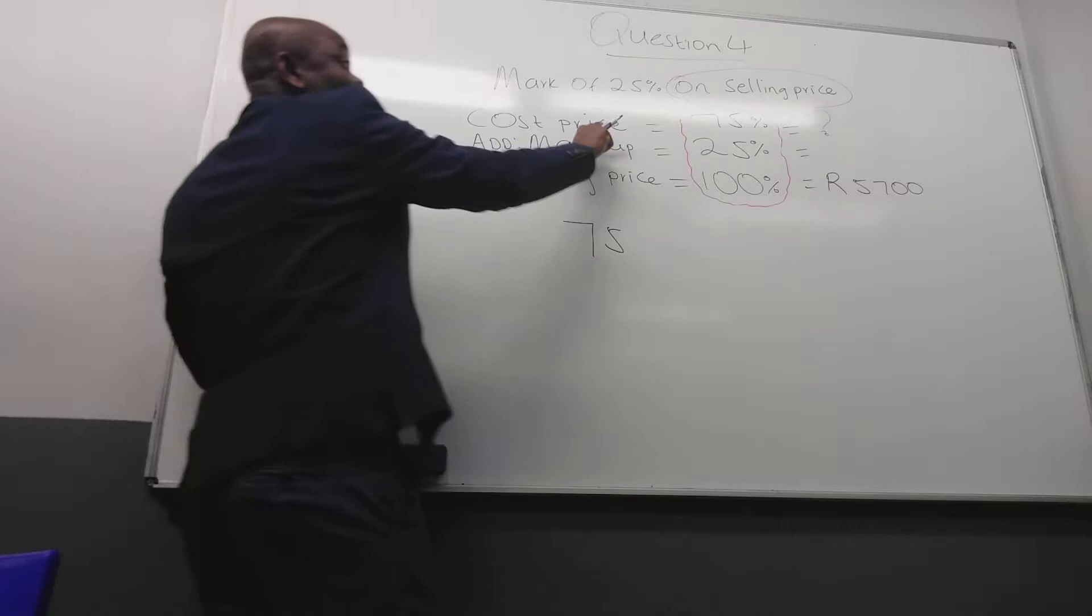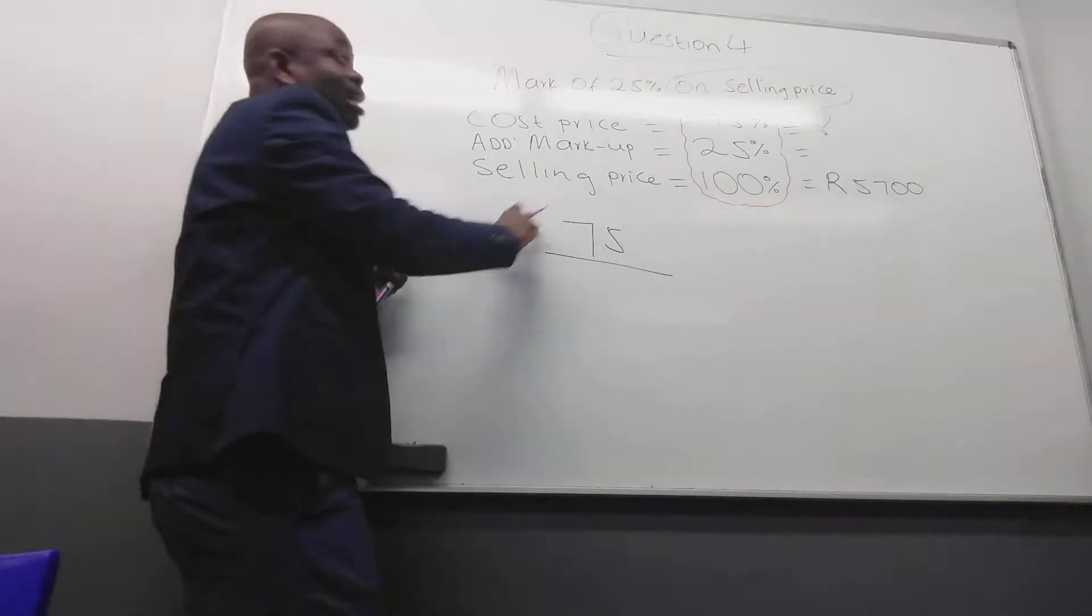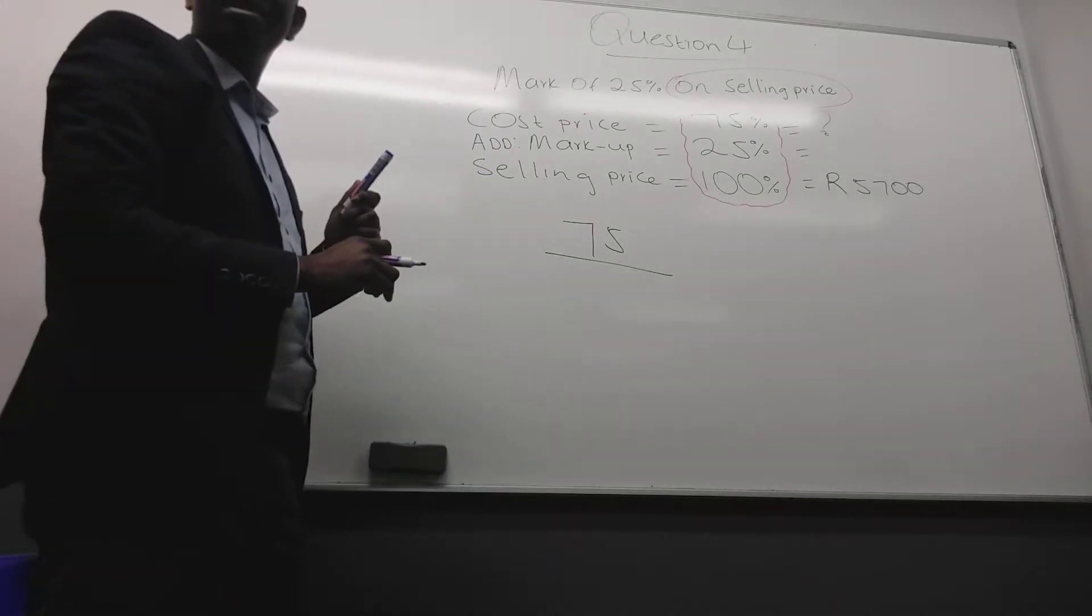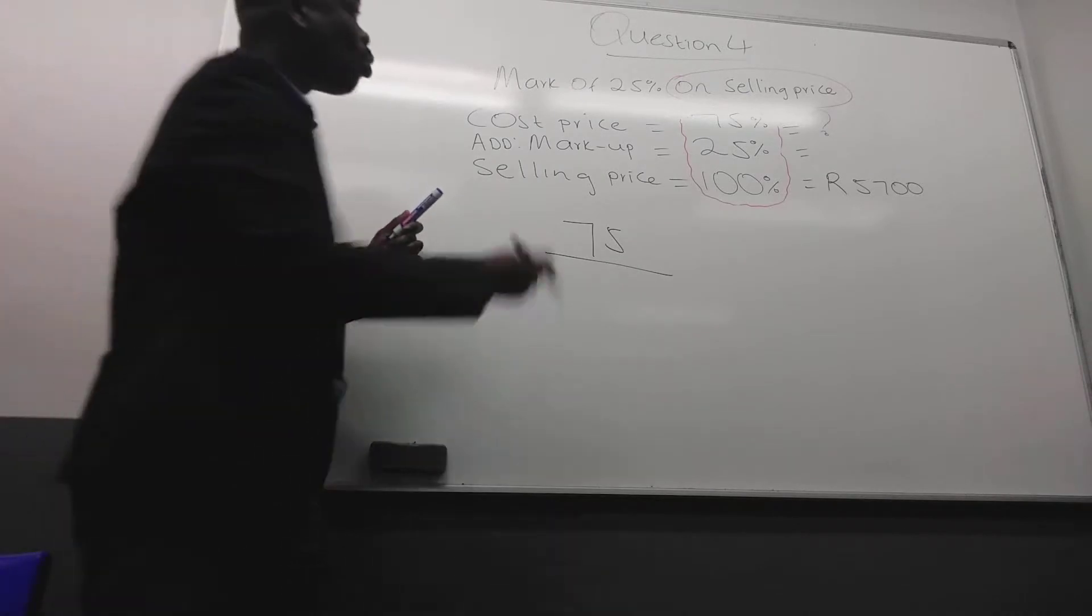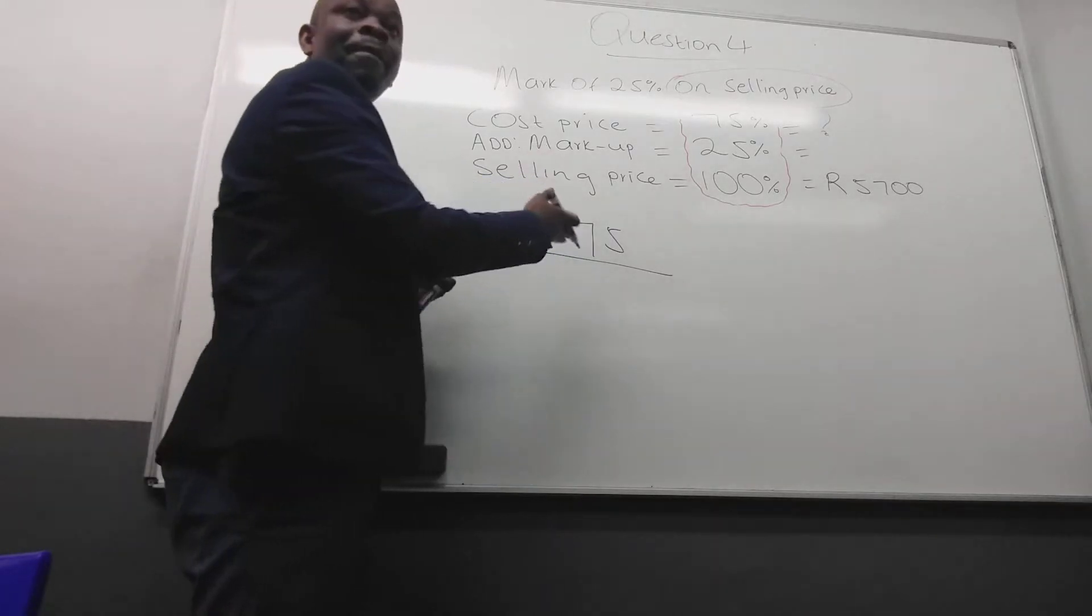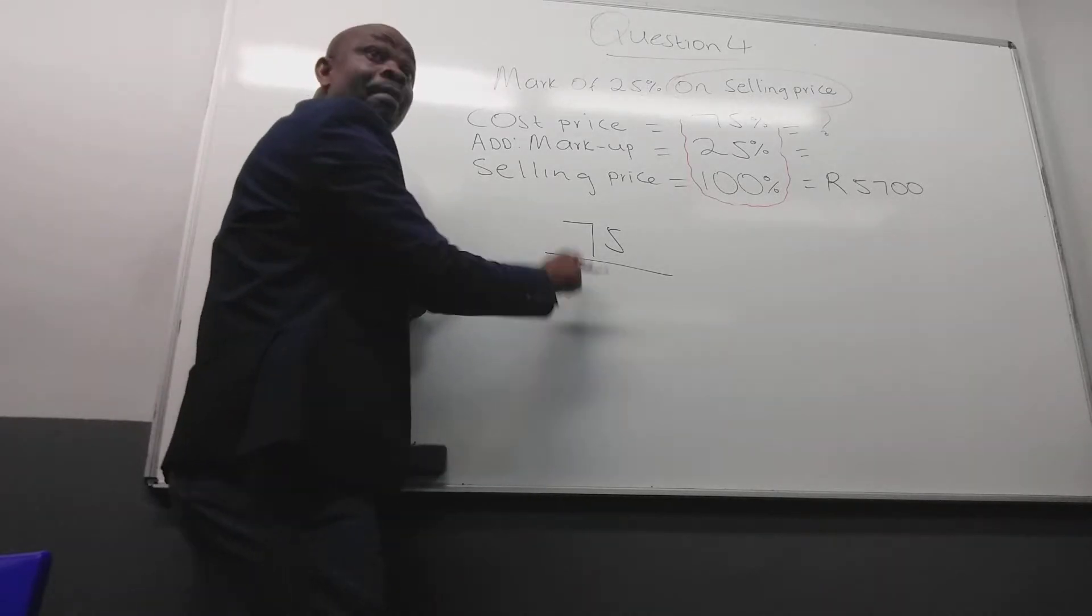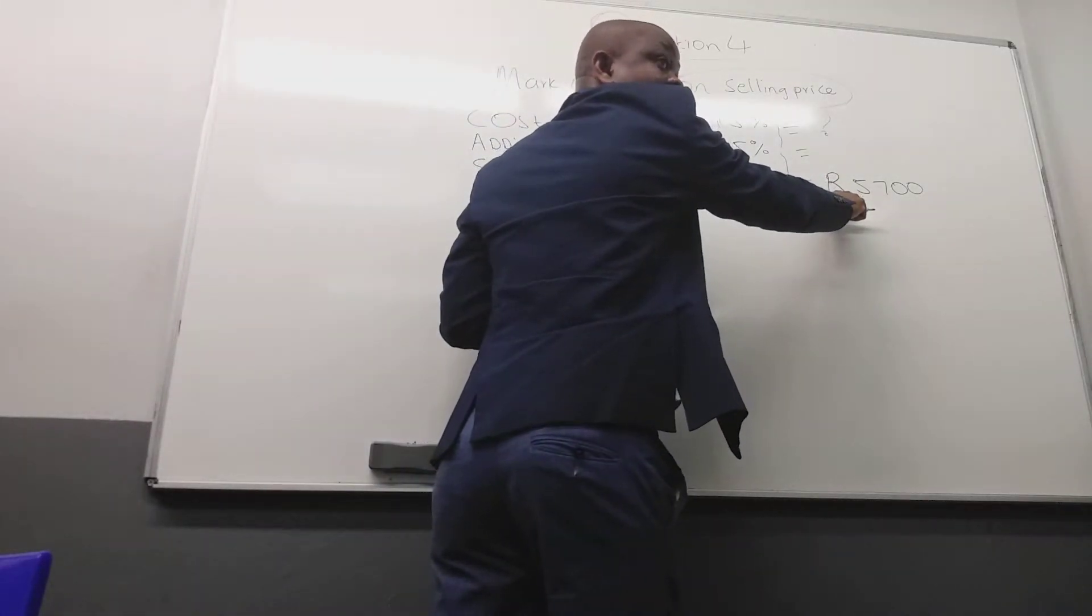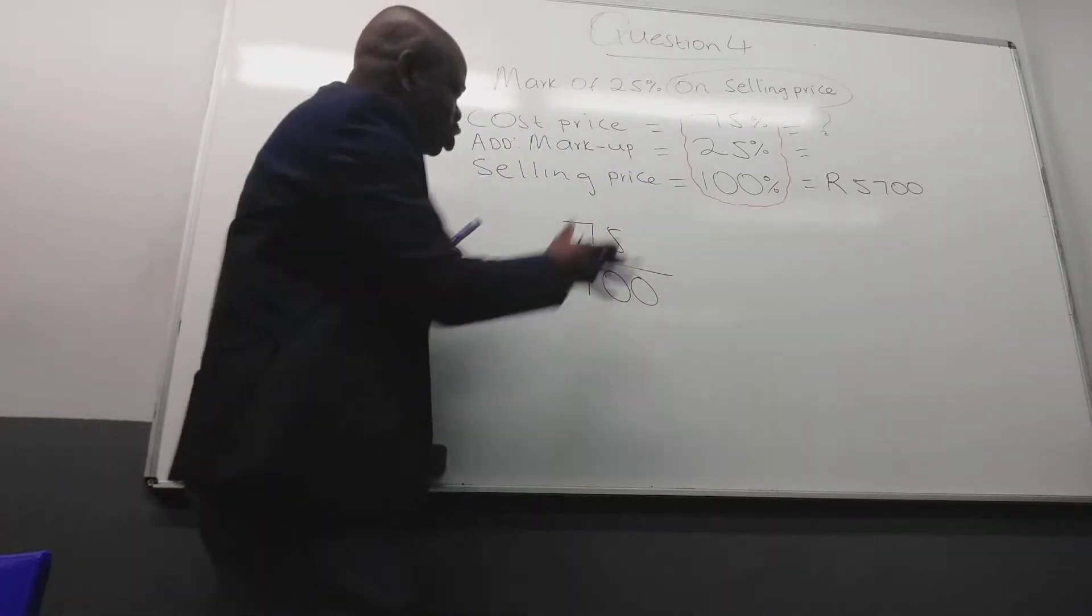So your fraction must come from this. You ask yourself a question: what am I trying to calculate here? The cost price. So what is the percentage of the cost price? Check. 75%. Can you see now? So if the question mark was here, you are supposed to put what? 25% on top. If the question mark was there, you are supposed to put what? 100% on top. So whatever you are looking for, its percentage must always be on top.